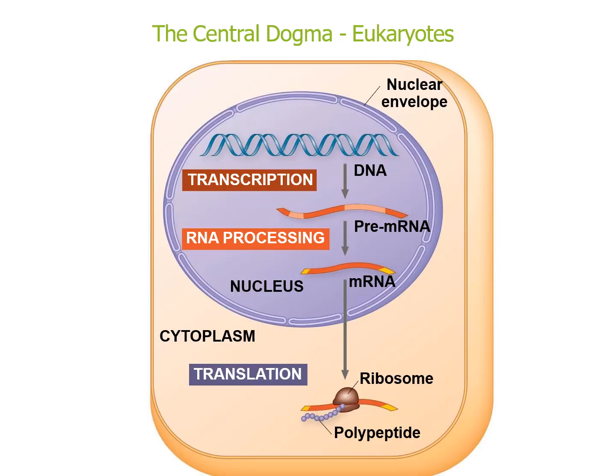Here is a diagram showing transcription, RNA processing, and translation occurring in the nucleus and cytoplasm. DNA to pre-mRNA is transcription. Pre-mRNA going to mRNA is RNA processing, during which certain modifications can occur, such as adding the 5' guanine cap, the poly-A tail, and splicing. After that, the mRNA goes to the nucleus and from there translation can occur at the ribosomes.